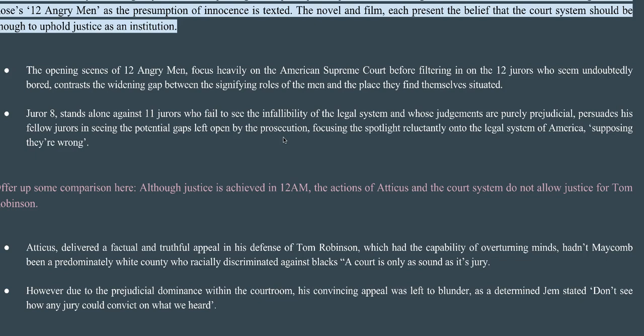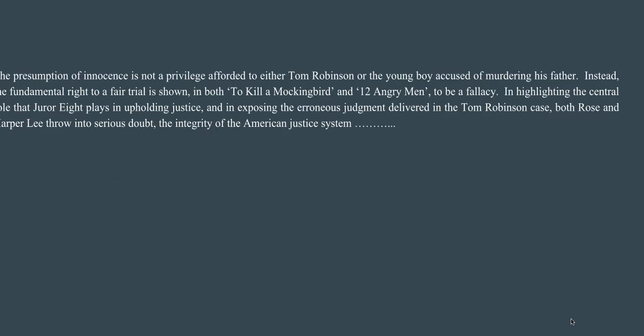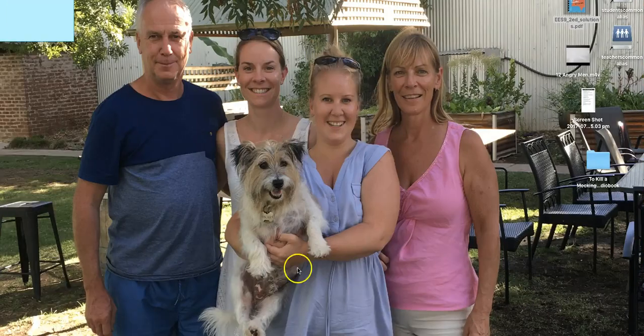A court is only as sound as its jury — that's Atticus's quote — and the jury ultimately determined the guilt of Tom Robinson, even though he certainly can't seem to have been guilty. And Jem says 'I don't see how any jury could convict on what we heard,' but I'm sure you'll be able to come up with another quote on your own. I've started a conclusion for you — you need to finish that conclusion on your own. I can't do everything for you, but hopefully I've put enough here to give you a rough idea of what we're going for. I hope this makes sense, Year 11. Thank you.